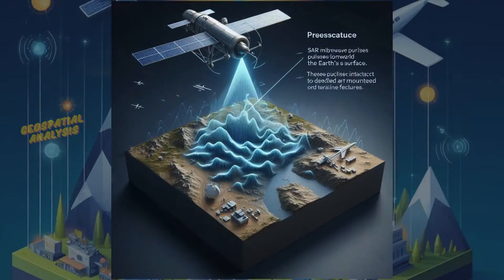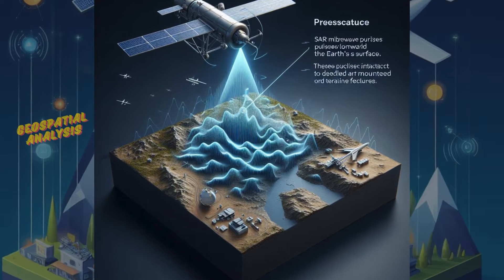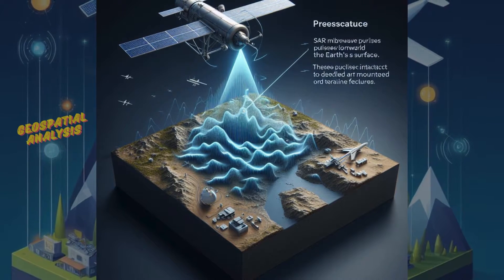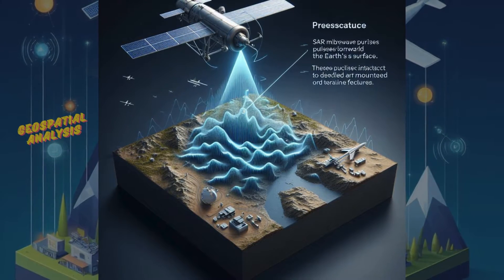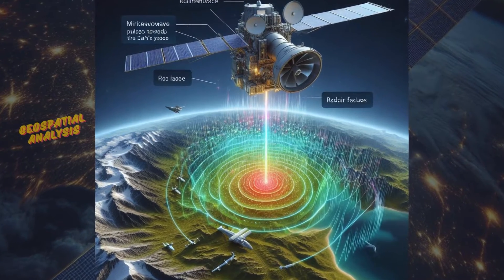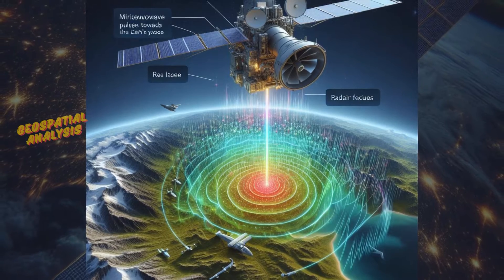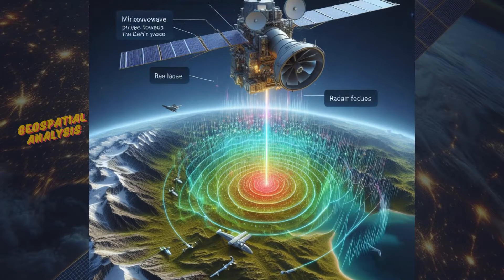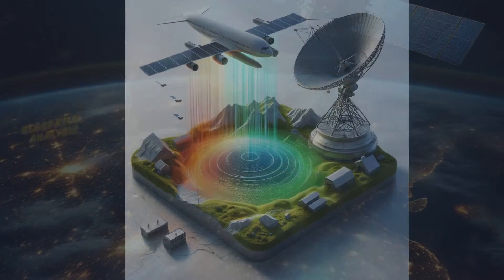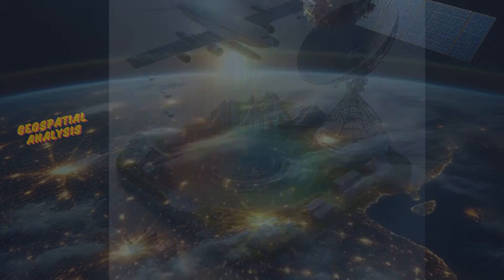Here's how synthetic aperture radar works. A synthetic aperture radar system emits microwave pulses towards the Earth's surface from a radar antenna mounted on a satellite or aircraft. These pulses interact with objects on the ground, such as buildings, vegetation, and terrain features. As the radar waves bounce off the Earth's surface, they are reflected back to the satellite's antenna. The radar receiver on board the satellite measures the time it takes for the signals to return and their intensity, forming a radar image of the observed area.